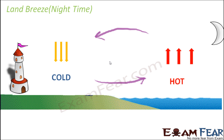In a similar fashion, just the reverse thing happens during the night — you see land breeze. At nighttime, land gets colder more quickly than the sea. So comparatively, the sea becomes hotter. Since the sea is comparatively hotter, hot air above the sea rises up, and a low pressure area is created over the sea. Therefore, air moves from the high pressure area over land towards the low pressure area over the sea. This cycle happens in the anti-clockwise direction. Land breeze is the cold air flowing from land towards the sea at night.